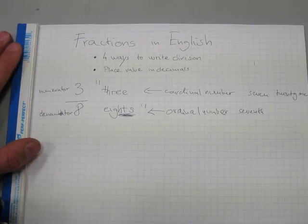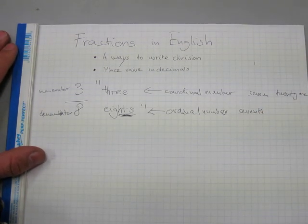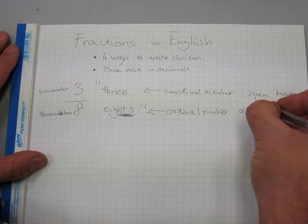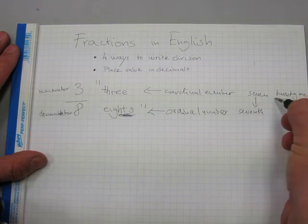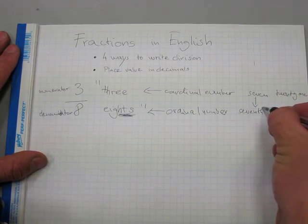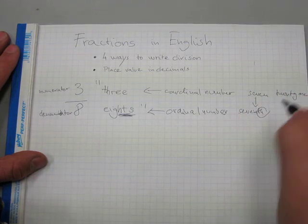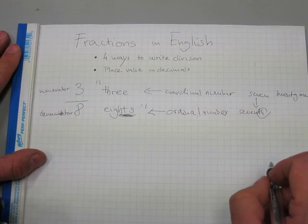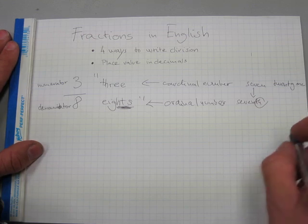Examples of ordinal numbers would be '7th.' You see the difference: '7' is the cardinal form, and '7th' is the ordinal form — the difference is that 'th' ending.